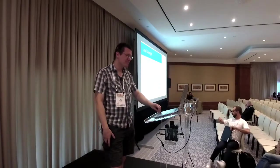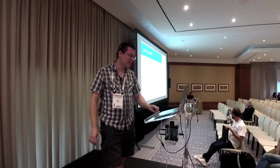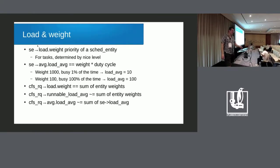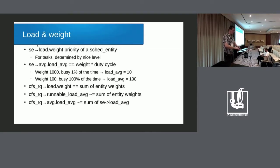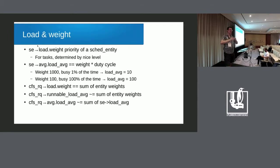For tasks, the nice level determines the value of the load.weight variable in the sched entity. For groups, you can set the cgroup cpu.weight value. Derived from weight is the load. A weight-1000 task that's busy 1% of the time will have a much lower load than a lower-priority task busy all the time. There are three different values in the run queue: load.weight is simply the sum of weights currently on the run queue, and the runnable load average is close to that but not quite the same.